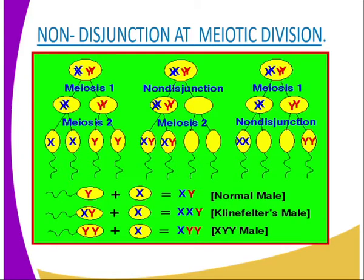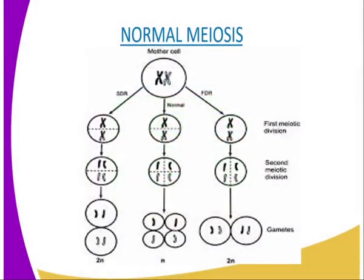This non-disjunction causes a disease which is known as Down syndrome, where there is an extra somatic chromosome number 21. Remember, in a human being there are 46 chromosomes, normally arranged in order from one up to 46. But in non-disjunction, there is an extra chromosome at chromosome 21, and this type of condition is known as Down syndrome.